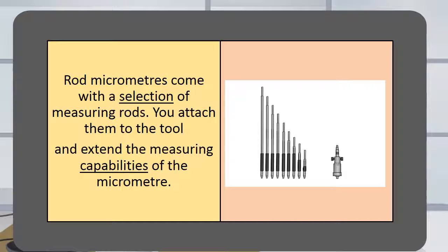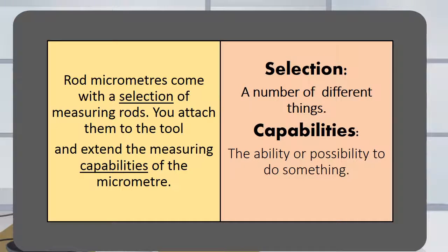Rod micrometers come with a selection of measuring rods. You attach them to the tool and extend the measuring capabilities of the micrometer. Selection is a number of different things. Capabilities is the ability or possibility to do something.